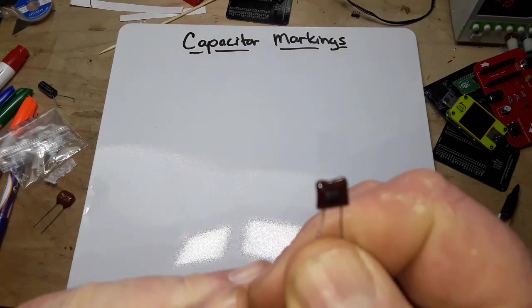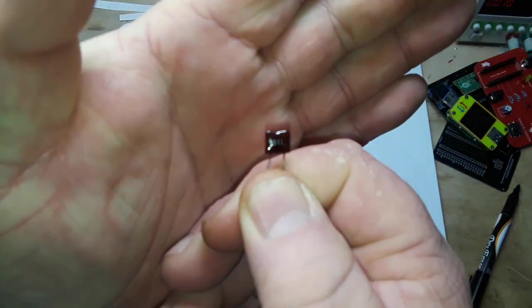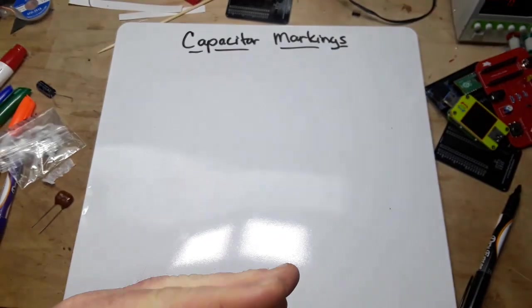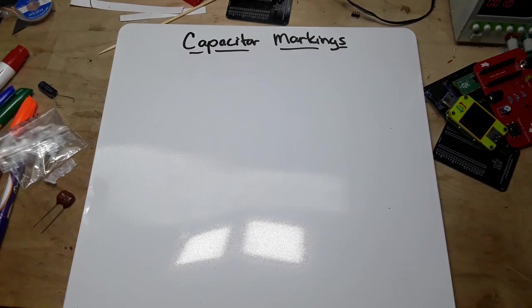Let me find one with the code here. Here's another one. I don't know how well you guys can read that - it says 511J. So let me draw this beautiful capacitor.